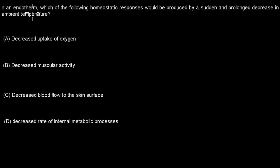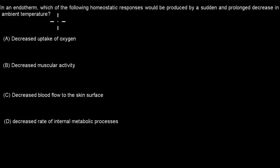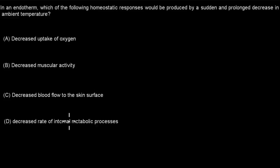The next question is: In an endotherm, which of the following homeostatic responses would be produced by a sudden and prolonged decrease in the ambient temperature? A. Decreased uptake of oxygen. B. Decreased muscular activity. C. Decreased blood flow to the skin surface. Or D. Decreased rate of internal metabolic processes. Pause the video and attempt the question.